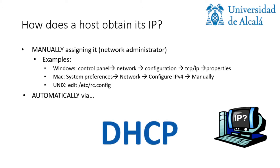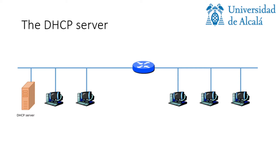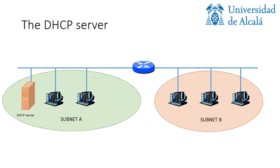So let's see how it works. Let's assume we have the following scenario with two subnets. In one of them we have a DHCP server — in particular, it belongs to subnet A. One DHCP server will only reply to requests coming from its own subnet. When a new host joins subnet A, it will use the DHCP protocol to obtain its IP.